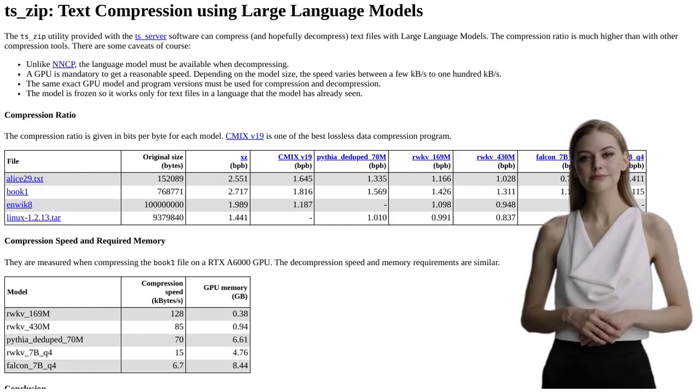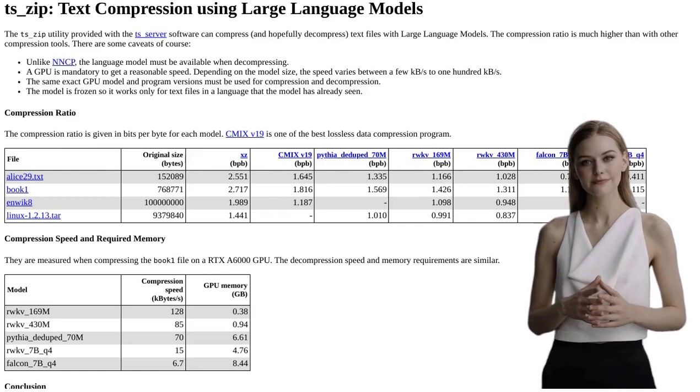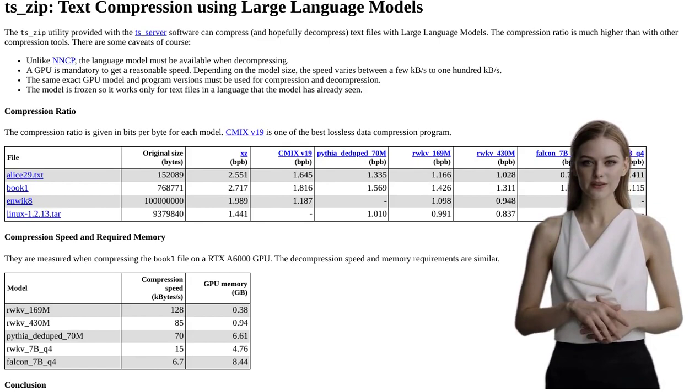These LLMs are like super-smart algorithms that can understand and predict patterns in language, making them perfect for compression. But here's where ts-zip really stands out from the crowd—it offers an unprecedented compression ratio.